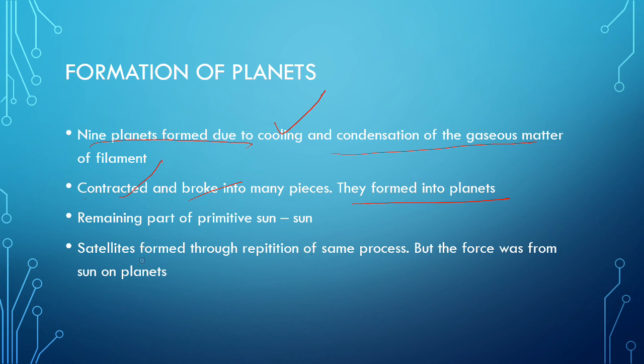Satellites also formed through repetition of the same process, but the force was from the sun acting on the planets. The planets formed due to the force of the intruding star, whereas satellites formed due to the gravitational force from the sun itself.